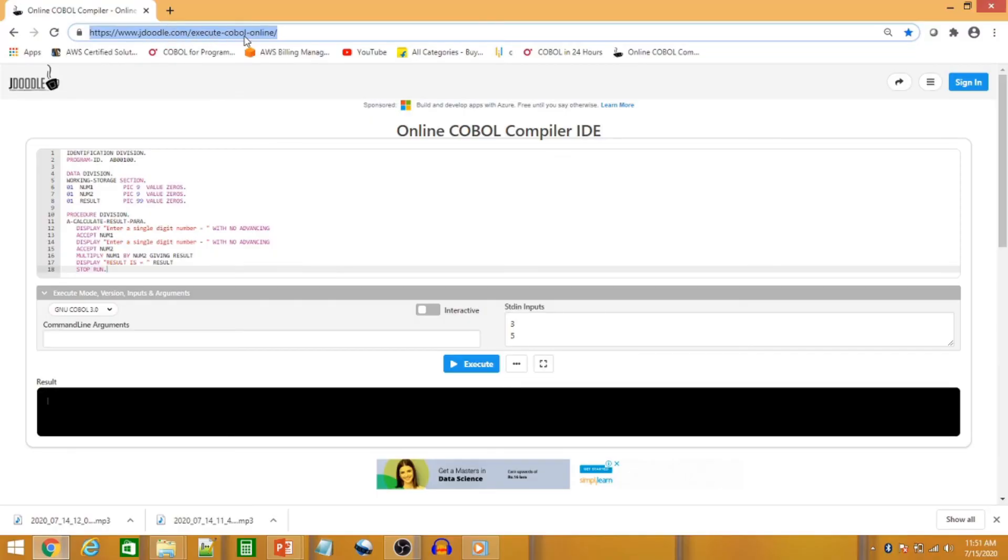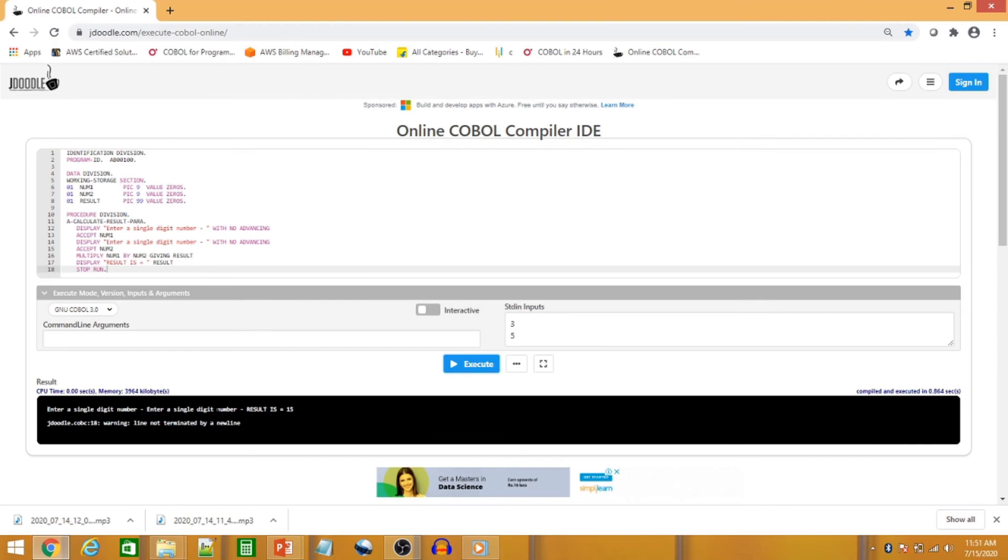Now let's run this program in online COBOL compiler. We are giving the first input as 3 and second input as 5 and click on execute. Here is the result of our calculation and it is showing result is 15.